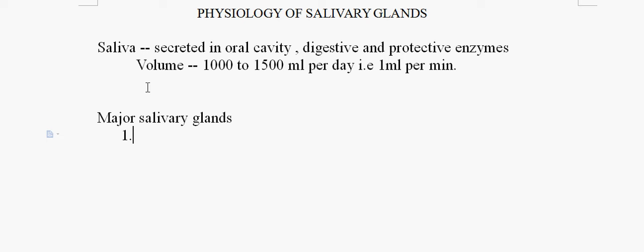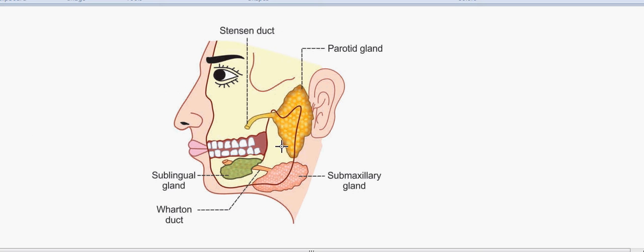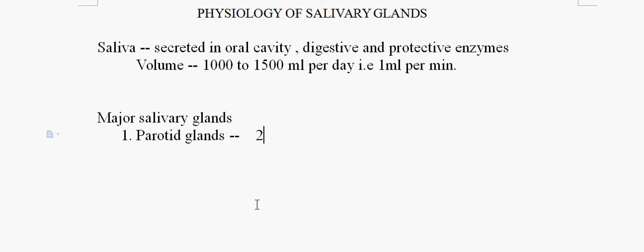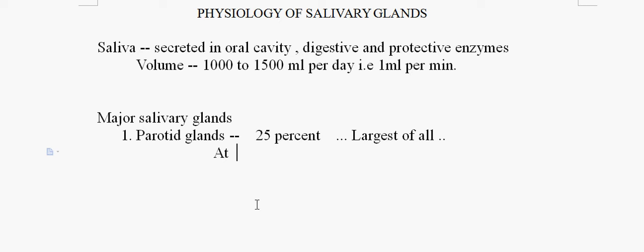The first major salivary gland is the parotid gland. As we can see in the picture, the parotid gland is the largest of all glands and is situated below the ear at the side of the face. It contributes 25% of the total saliva secreted.